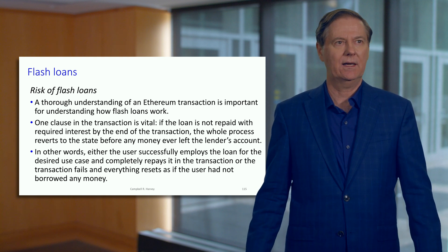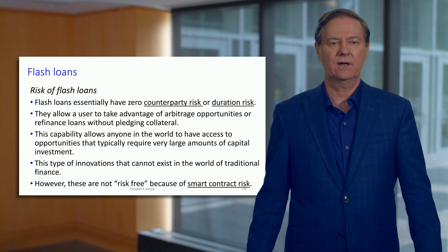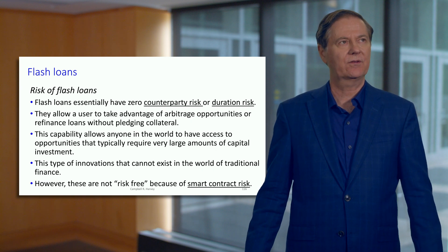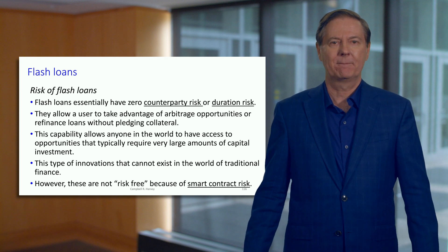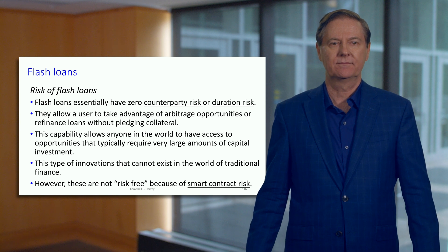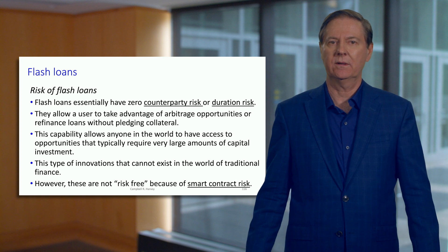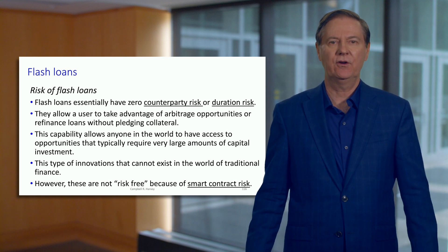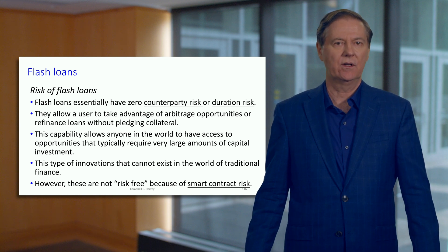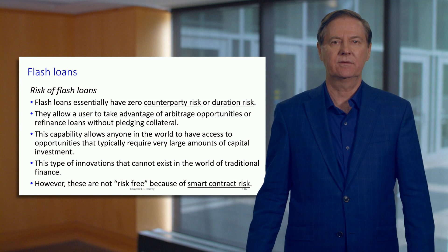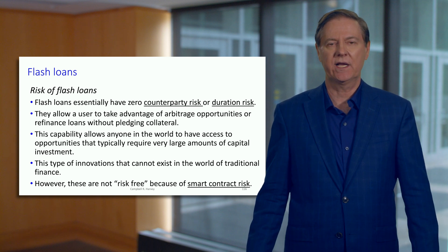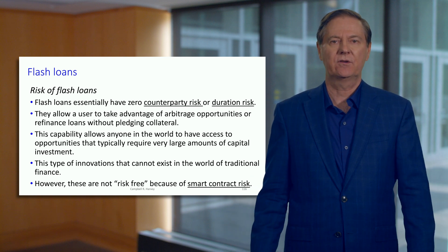This is a very interesting possibility. There's no counterparty risk and no duration risk. We take advantage of some arbitrage opportunity — we'll be buying and selling. We take the loan to start things off, buy on one contract, sell on another contract, then pay off the loan, and whatever is left over is our profit.